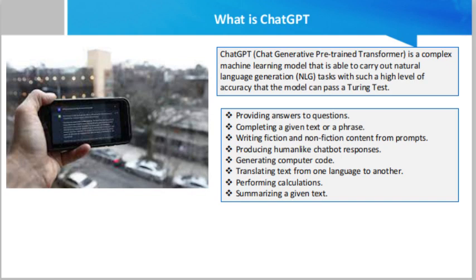The tasks that GPT excels at include: providing answers to questions, completing a given text or phrase, writing fiction and non-fiction content from prompts, producing human-like chatbot responses, generating computer code, translating text from one language to another, performing calculations, summarizing a given text, classifying text into different categories, and analyzing text sentiments.